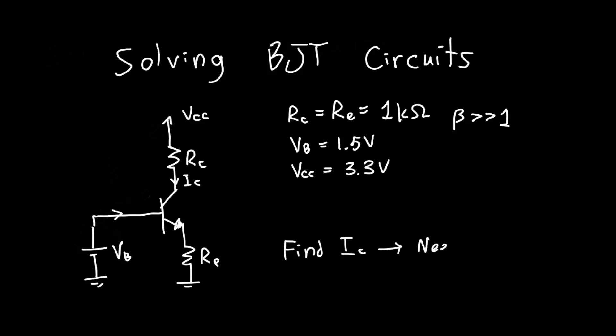If we want to solve the circuit exactly, we need IS, or the reverse saturation current. If we want to solve the circuit approximately, then we need a value for VBE on. This is usually the way that you'll solve BJT circuits, although sometimes you might need to solve them more exactly. Let's say in this case, VBE on is just equal to 0.7 volts.